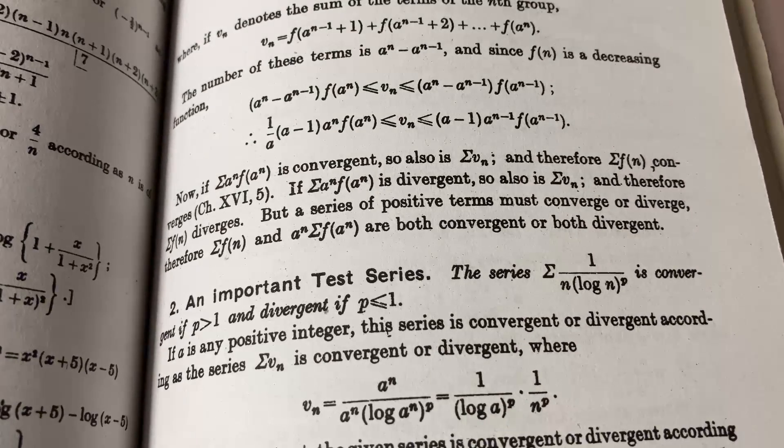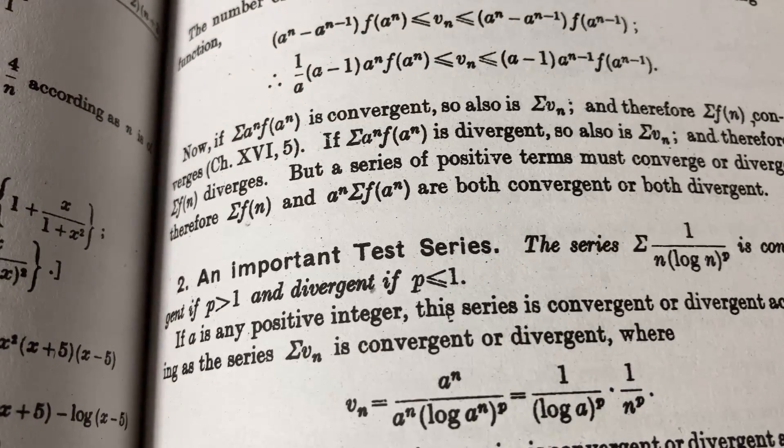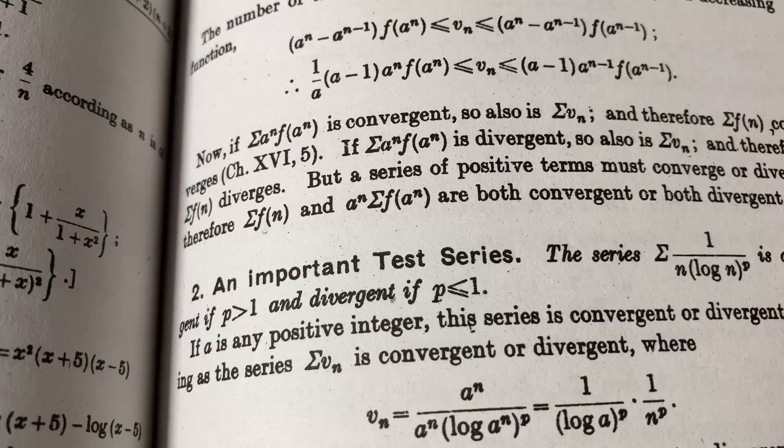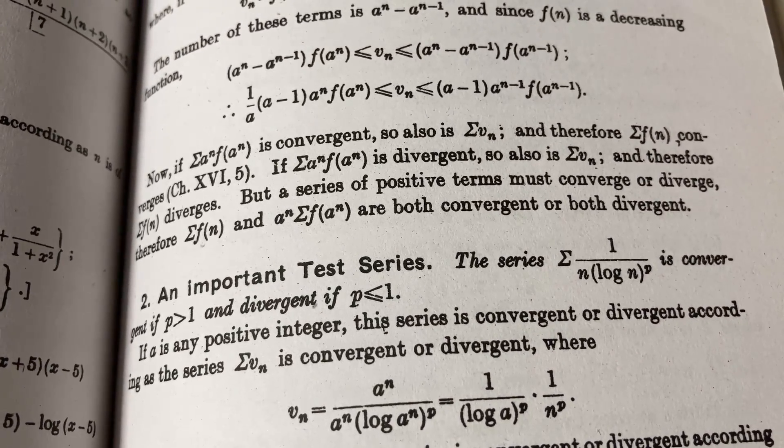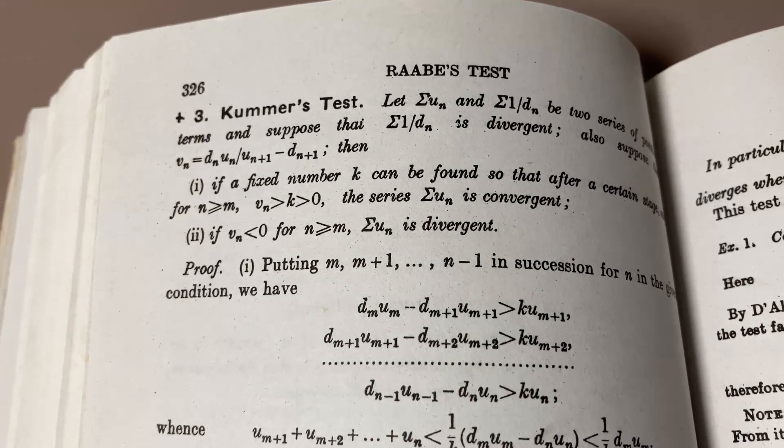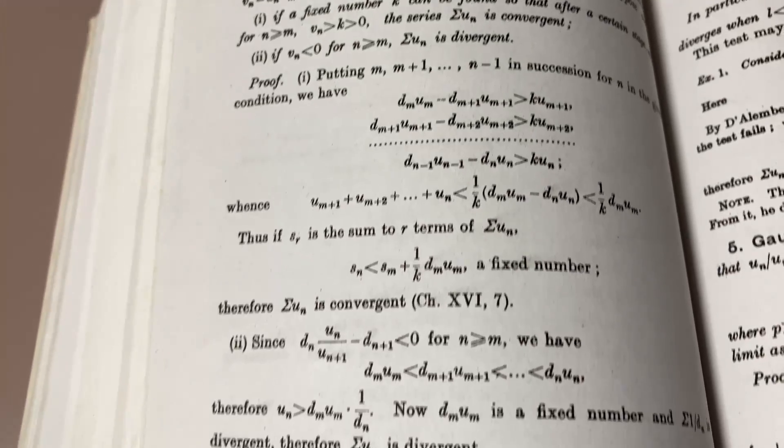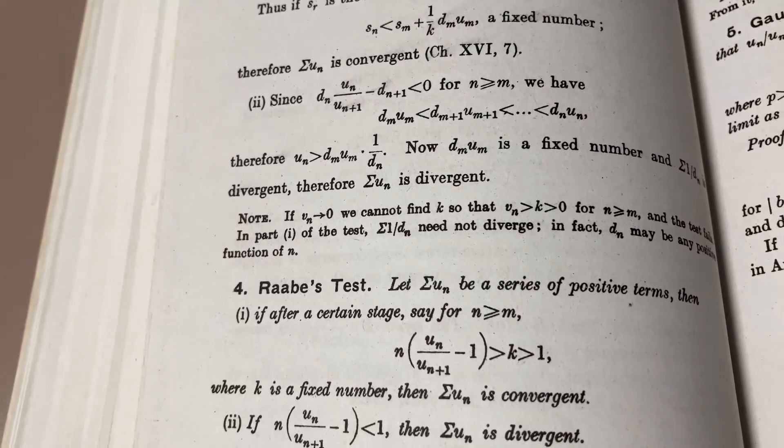This chapter here talks about some really interesting series tests. For example, here you have a test. It says that this series is convergent if p is greater than 1 and divergent if p is less than or equal to 1. Here's another series test called Comer's Test.